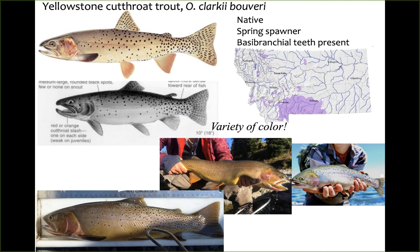Yellowstone cutthroat trout, Oncorhynchus clarkii bouvieri, are native to Montana. They are spring spawners and have basibranchial teeth present in their mouth, which is one feature you can use to distinguish them. Specimen 5.4 has teeth very clearly shown — you should view that specimen under the dissecting scope. Specimen 5.4a is a greenback cutthroat trout from Colorado, which has few large spots near its tail; contrast this with the many smaller spots in the Westslope cutthroat trout. You don't need to identify the greenback cutthroat.